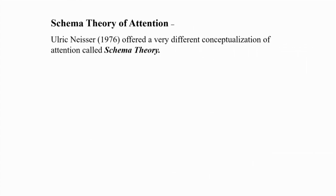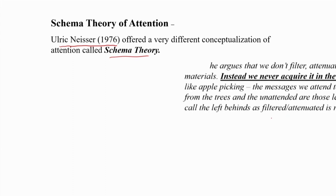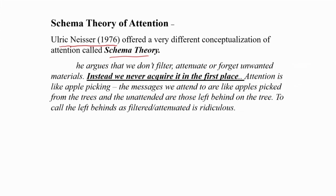The next theory is the schema theory of attention, proposed by Ulric Neisser in 1976. This is a very different view — it says people's attention does not filter or unfilter things. Attention is not a process which separates things that get filtered from those that do not. Rather, things which are not filtered — things we would not put our attention on — we actually do not perceive at all.